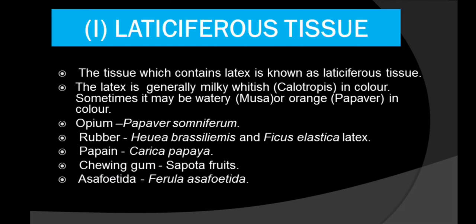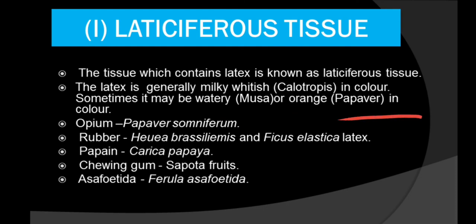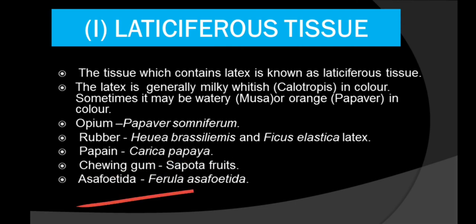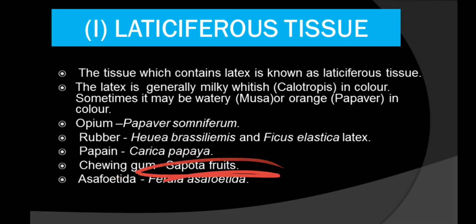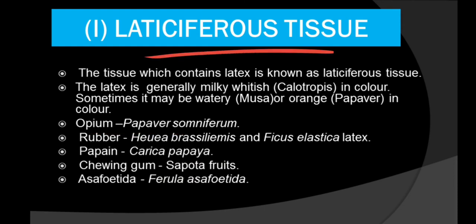Laticiferous tissues contain latex. The cells which contain latex are known as laticiferous tissues. Latex is generally milky and whitish in color, sometimes watery — for example in Musa or orange, colorful in Papaver, and milky in Calotropis. Examples of products obtained include: opium from Papaver somniferum, rubber from Hevea brasiliensis and Ficus elastica, papain from Carica papaya, chewing gum from Sapota, and asafoetida from Ferula asafoetida.